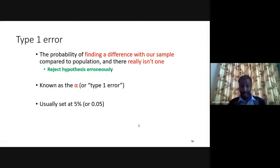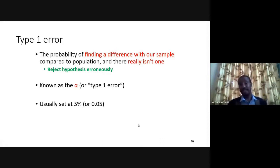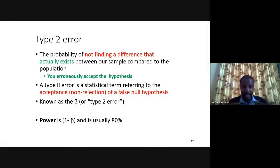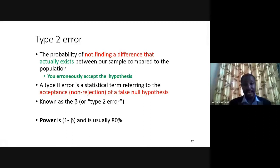In natural science and health matters, researchers are very sensitive — most of the time placing a 99% restriction, meaning only one percent Type I error is accepted. In management and commerce research, five percent is tolerable. Type II error is the probability of not finding a difference that actually exists between your sample and the population. There is a difference, but we are not finding it — we erroneously accept the hypothesis when in fact we should reject it. Type II error refers to the non-rejection of a false null hypothesis.